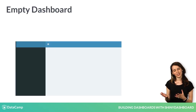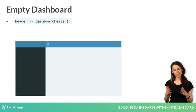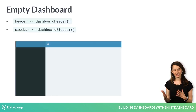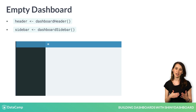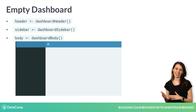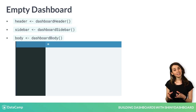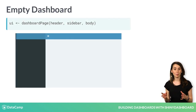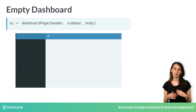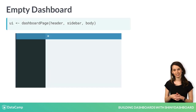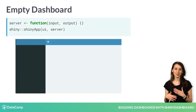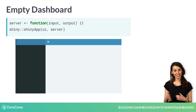The dashboard header is created using the dashboard header function. Similarly, the dashboard sidebar and the dashboard body functions edit the sidebar and the body. You can combine these three pieces using the dashboard page function to make the UI, the user interface. We can then use this UI along with an empty server function with Shiny's shiny app function to spin up an empty dashboard.